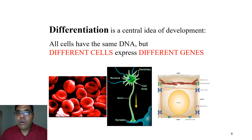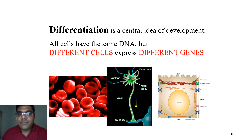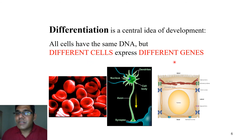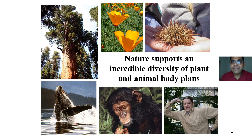In this whole scenario, differentiation is the central idea of development. All the cells in our body have the same DNA content, but different cells express different genes. Why is an erythrocyte different from a neuron? Both have the same DNA — why is a neuron a neuron and an erythrocyte an erythrocyte? Because different cells express different genes.